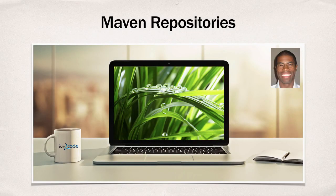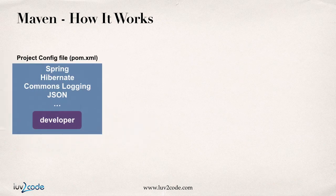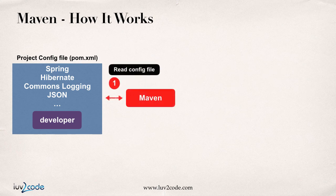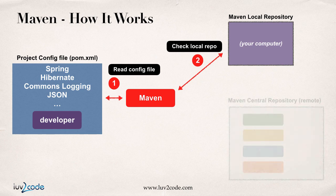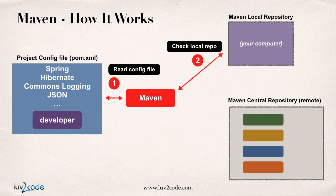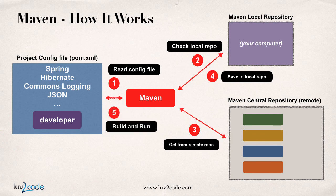In this video, we'll cover the Maven repositories. As a recap of how Maven works, we have this project configuration file at pom.xml. That's basically our shopping list of all the items that we need for our project. Maven will read this configuration file, then go out and check our local Maven repository to see if those files are there. If not, Maven will go to the Maven central repository that's remote on the internet, grab the files, download them, and save them into our local repo.